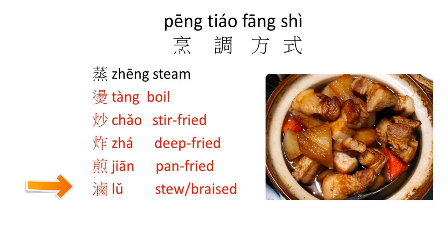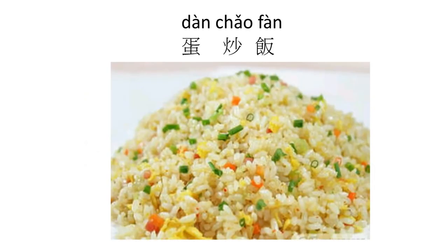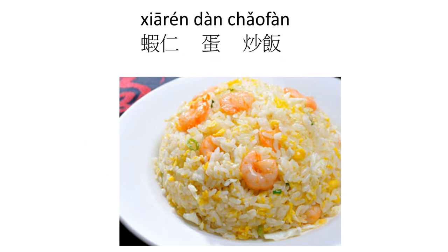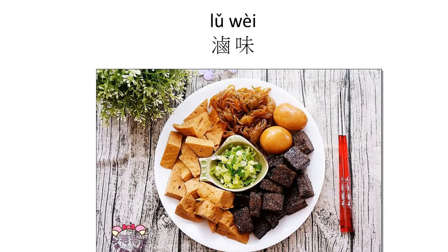Now for some common dishes. 蛋炒飯 — 蛋 is egg, 炒 is stir-fry, and 飯 is rice, so it's egg fried rice. 蝦仁蛋炒飯 — 蝦仁 is shrimp without a shell, 蛋 is egg, and 炒飯 is fried rice. That's my favorite!